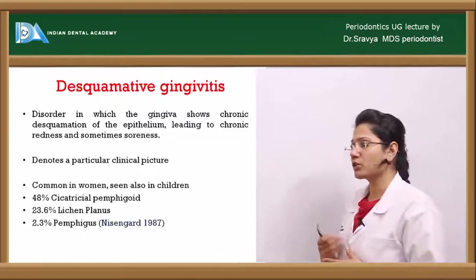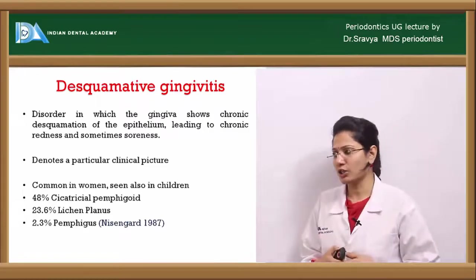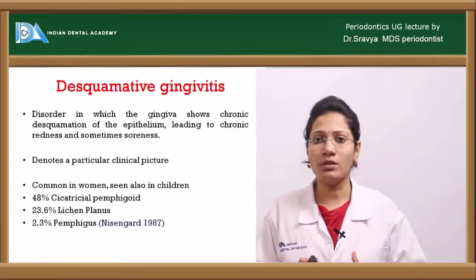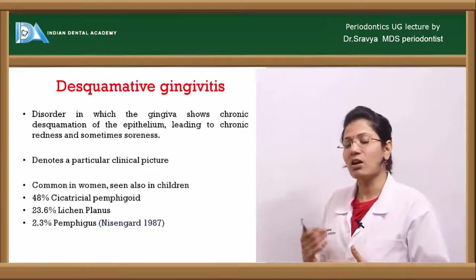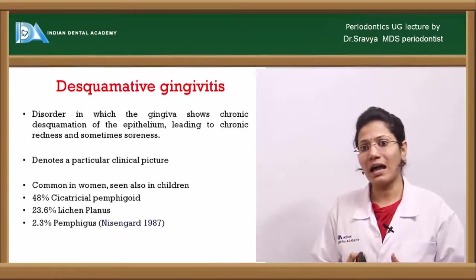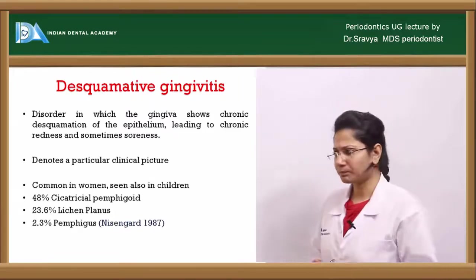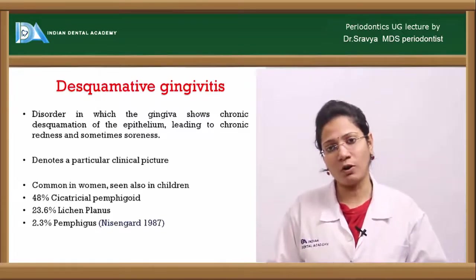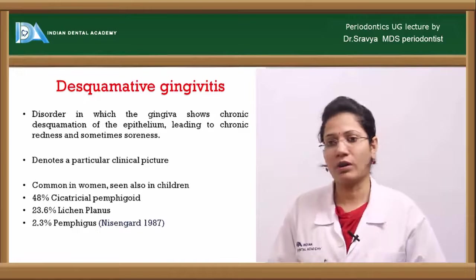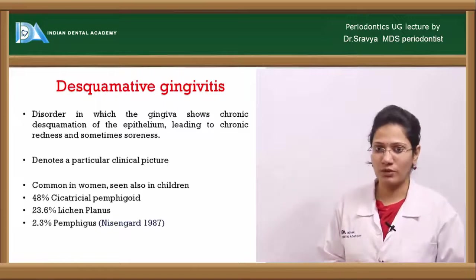It is a disorder in which the gingiva shows chronic desquamation of the epithelium, leading to chronic redness and sometimes soreness. It denotes a particular clinical picture. Most common cases have been reported in women and may also be seen in children. 48% of cases have cicatricial pemphigoid as the underlying pathology, 23.6% have lichen planus, and just 2.3% have pemphigus as the underlying pathology.